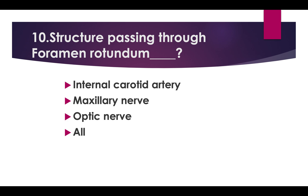Structures passing through Foramen rotundum. Options: Internal carotid artery, Maxillary nerve, Optic nerve, All of the above. Correct answer is Maxillary nerve.